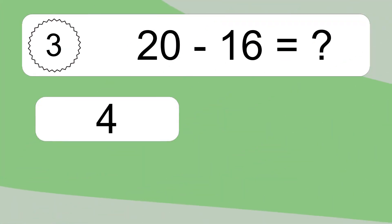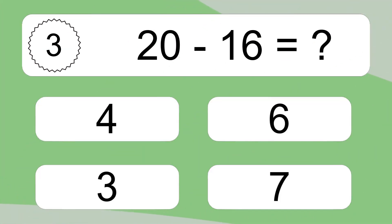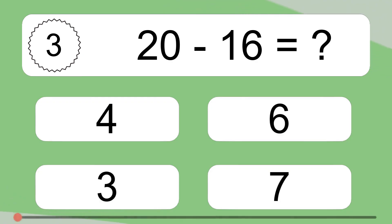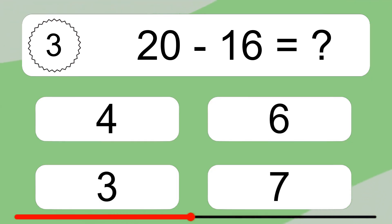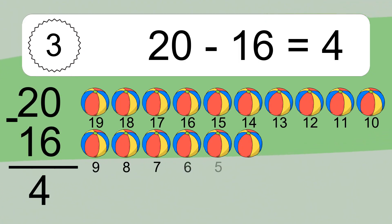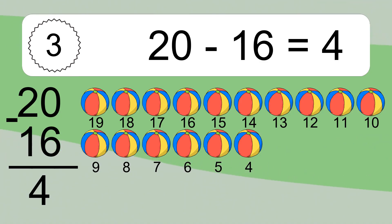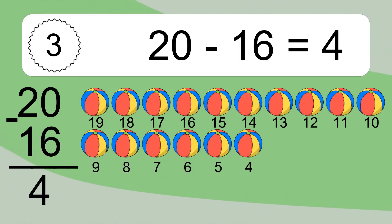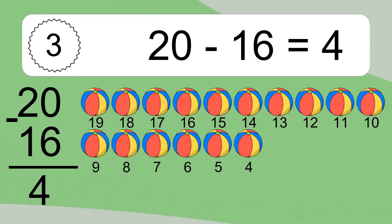20 minus 16 equals what? 20 minus 16 equals 4. Let's count it. 19, 18, 17, 16, 15, 14, 13, 12, 11, 10, 9, 8, 7, 6, 5, 4.